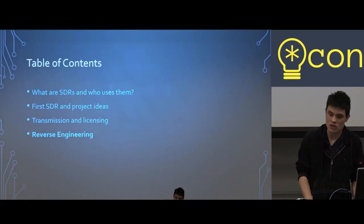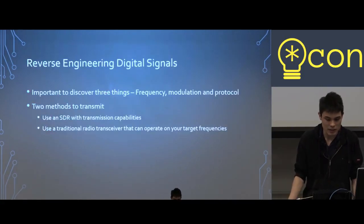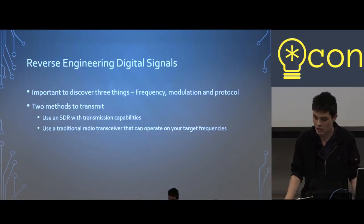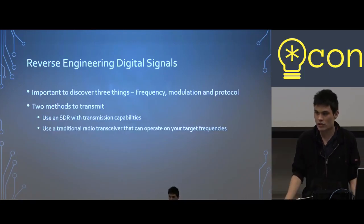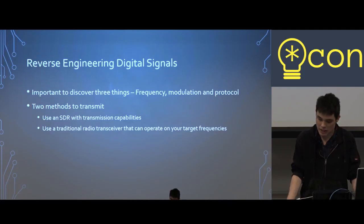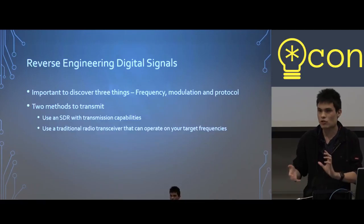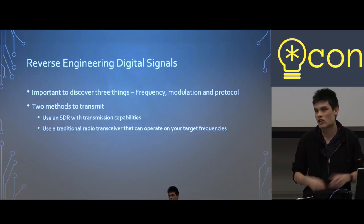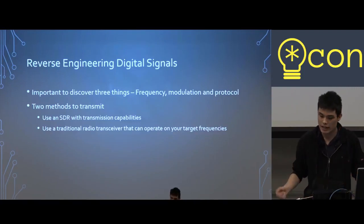Finally, let's talk about reverse engineering digital signals. Say you want to build your own garage door opener, toggle a radio light switch, or drive around an RC car — for this we need to reverse engineer the original system. We need to discover three things: the frequency the remote transmits at, the modulation the remote uses to transmit the binary string, and finally the protocol — which binary string we need to send to make the car turn left, make the lights turn on, and so on.